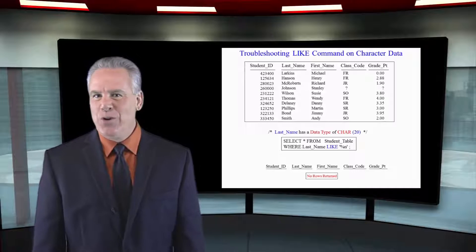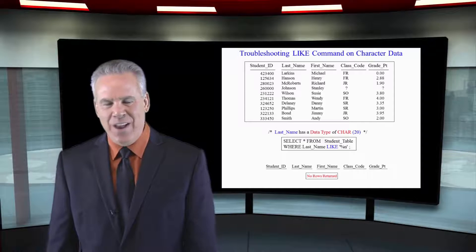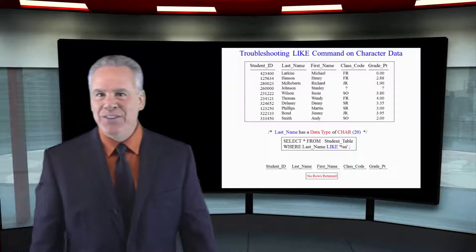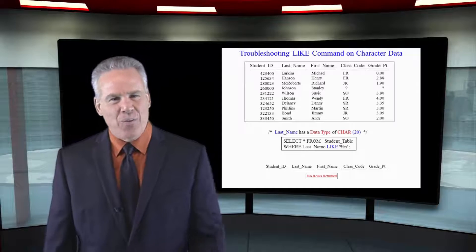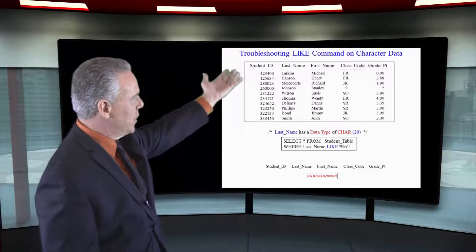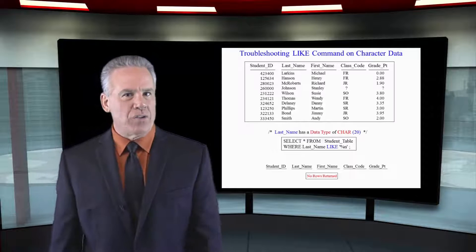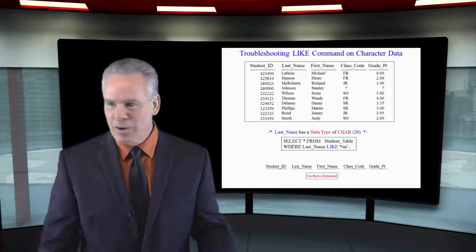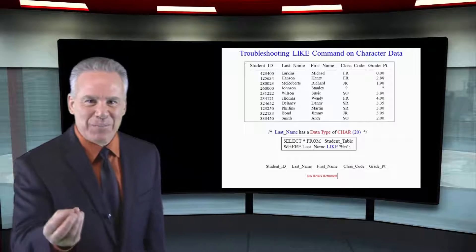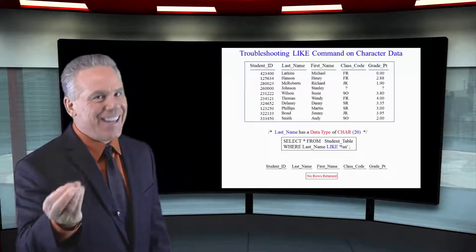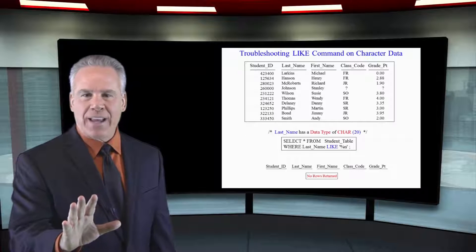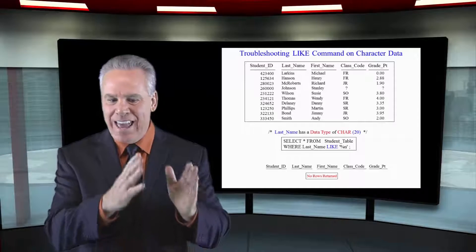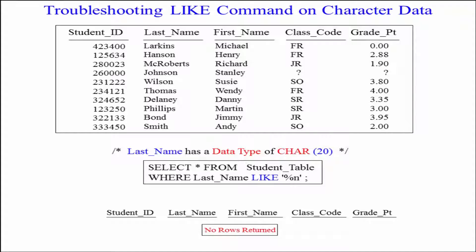Now this is where you could get burned. We're going to see where the last name ends in an N — we think we've got a lot of those. Take a look at that: we're going to expect some rows coming back, but nothing comes back. People are always like, 'What? I know there are people whose last names end in N, but nothing came back.' That's because it's CHAR(20) and there are spaces at the end.